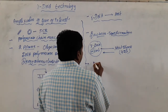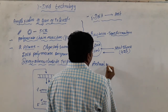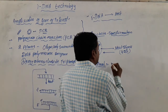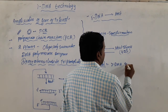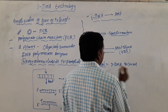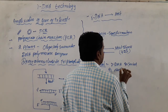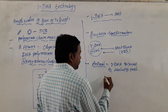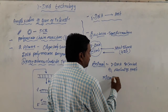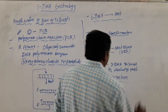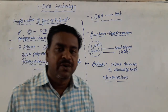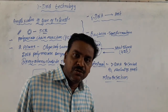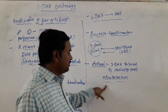In the case of animal cells, another method is used for introduction of recombinant DNA. The recombinant DNA is directly injected into the nucleus of the host cell. This method is called microinjection, and it is used only for animal cells.